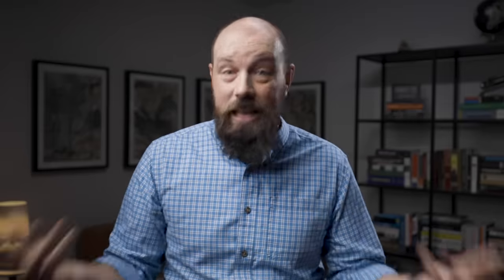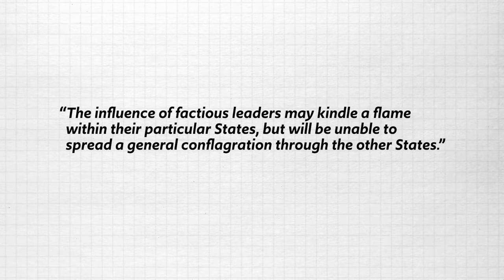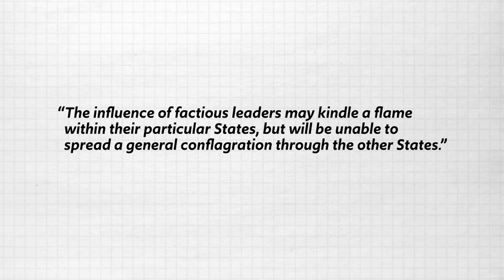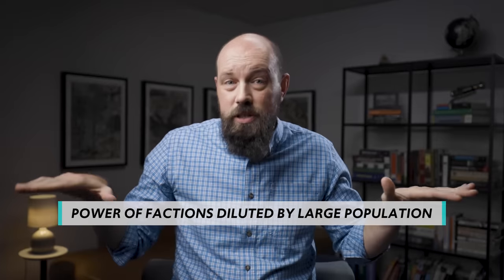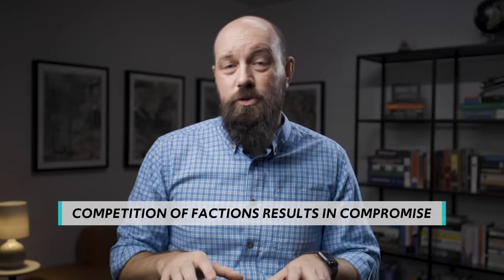The result is plain: "The influence of factious leaders may kindle a flame within their particular states, but will be unable to spread a general conflagration to the other states." Madison's solution to the danger of factions is this: as more people are added to the nation, more and more factions will necessarily form, and that has two consequences. First, with so many factions, their power will be diluted so that no one faction can always get their way. Second, because they're all in competition with one another, they will be forced to compromise their interests in order to pass legislation that considers the common good of society and not merely the interests of one group.